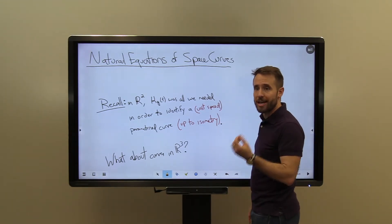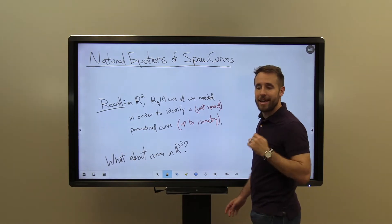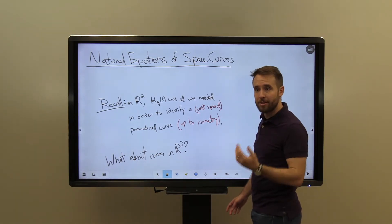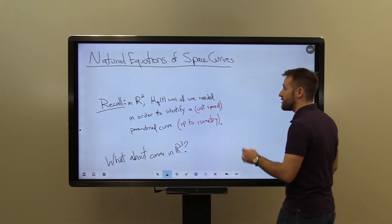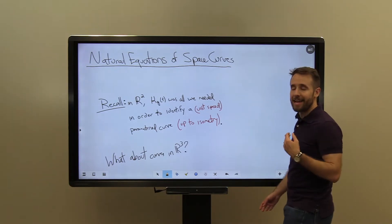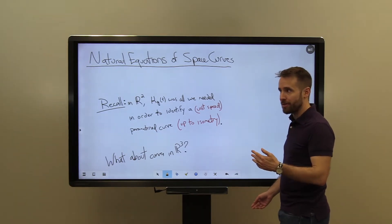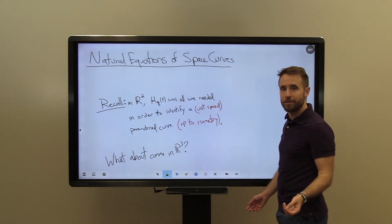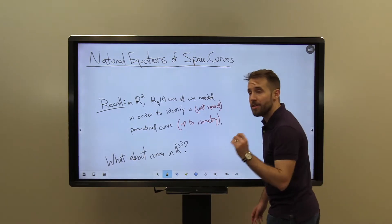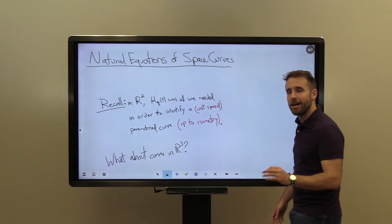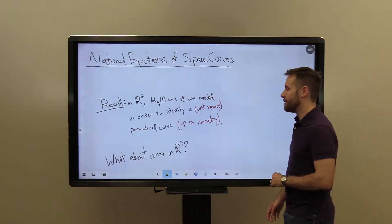In other words, given a function kappa, there existed a parametrized curve — parametrized by unit speed — that had that curvature function as its curvature, and furthermore this was unique up to an isometry or a rigid motion in the plane.